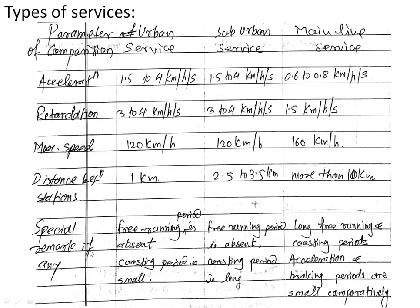Special remarks from these observations: for urban service, there is no free-running period and the coasting period is small. For suburban service, the free-running period is absent and coasting period is longer compared to urban service. For mainline service, there are long free-running and coasting periods, while acceleration and braking periods are small compared to urban and suburban. We will see these periods — coasting period, braking period, free-running, acceleration, and braking retardation — in the speed-time curve.